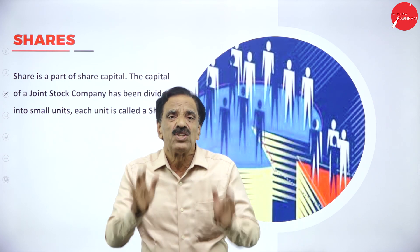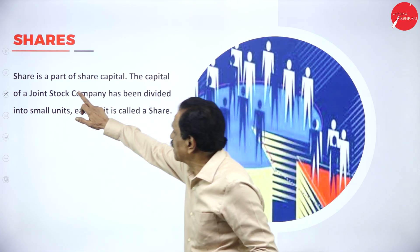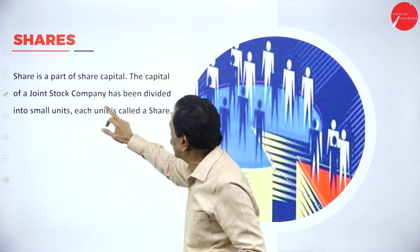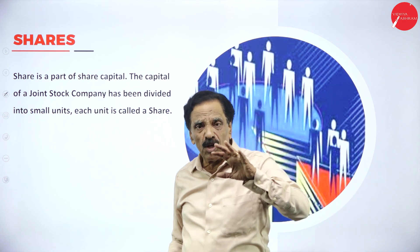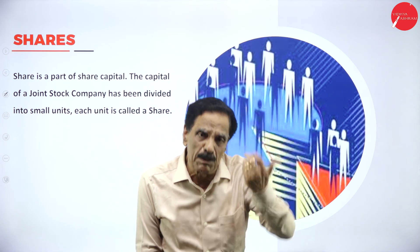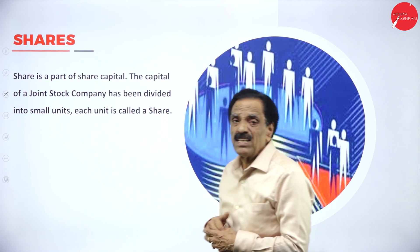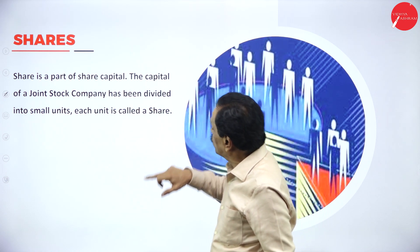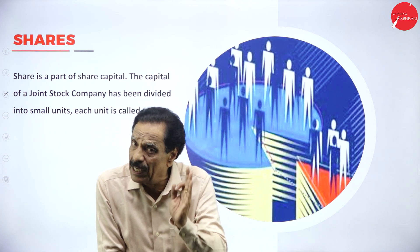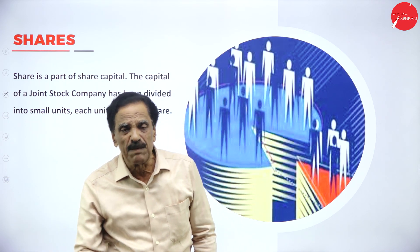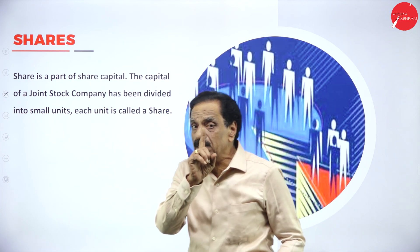What is a share? A share is a part of share capital. The capital of a joint stock company has been divided into a number of small units, and each unit is called a share. The company issues a prospectus inviting the public to become members. If you want to become a member, you have to pay the money — that investment is called a share. Each member is called a shareholder.